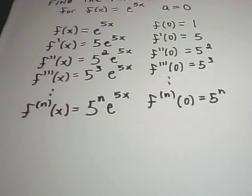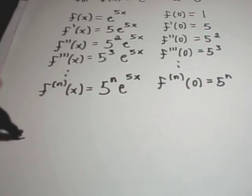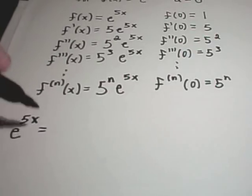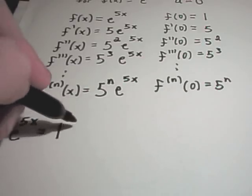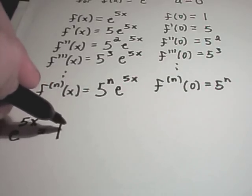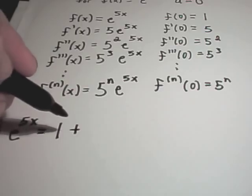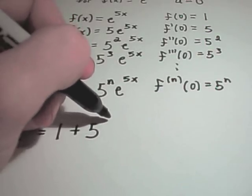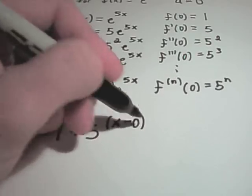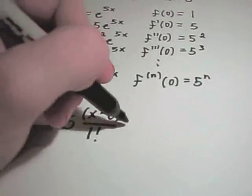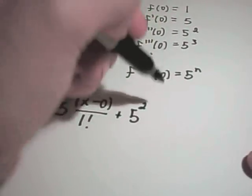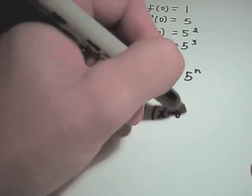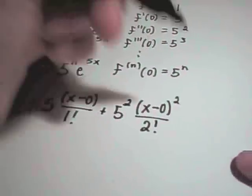Comparing to the formula, we can write e^(5x) as: f(0) which is 1, plus f'(0) which is 5, times (x minus 0) over 1 factorial, plus f''(0) which is 5 squared, times (x minus 0) squared over 2 factorial, and we just keep this pattern going indefinitely. We're not going to discuss the justification for when this works in this video.